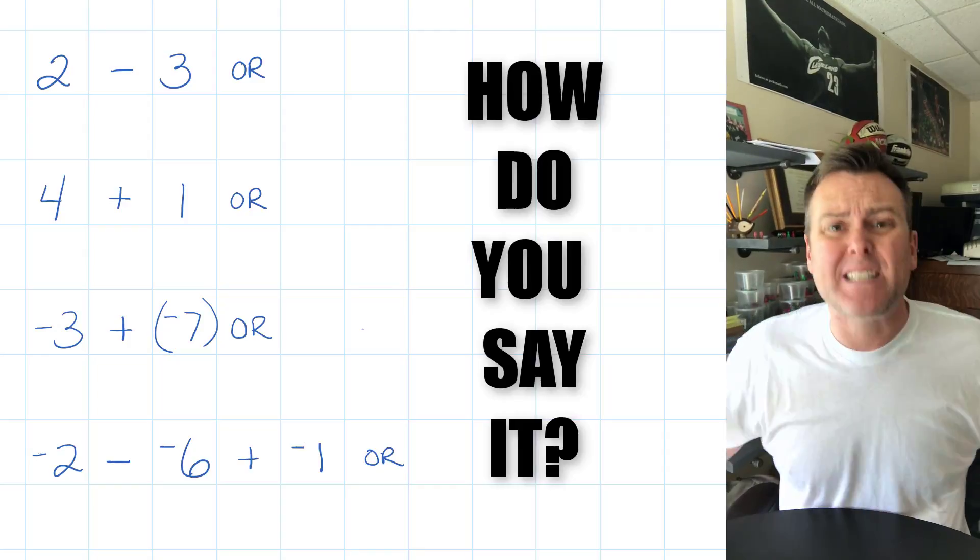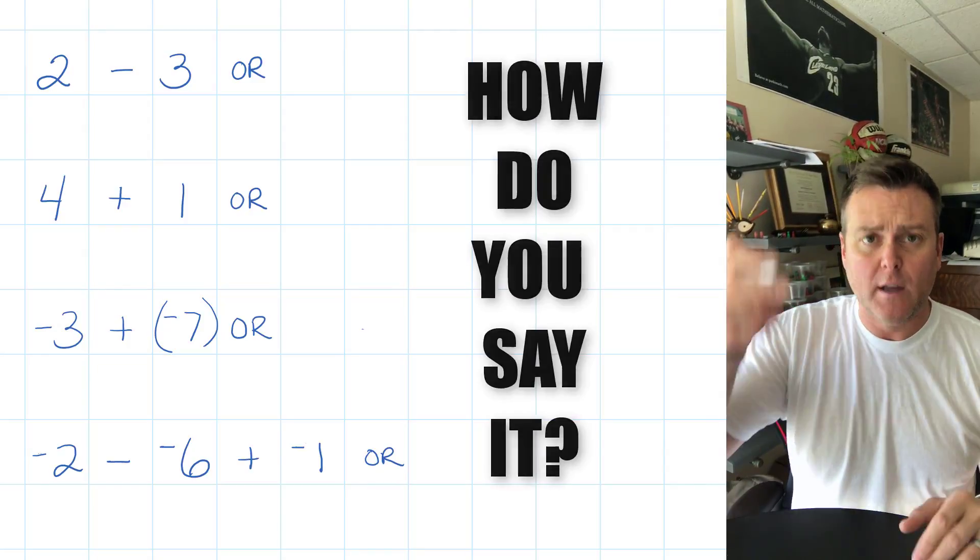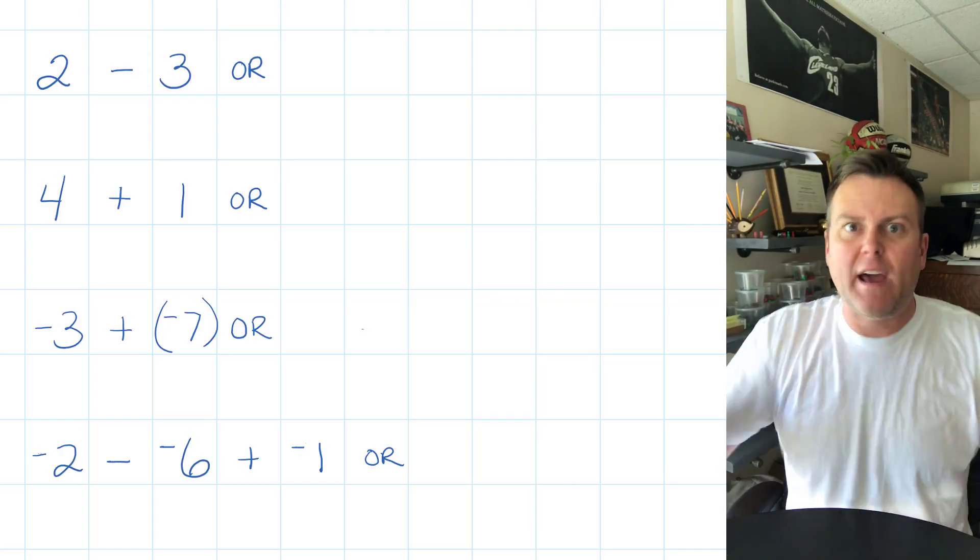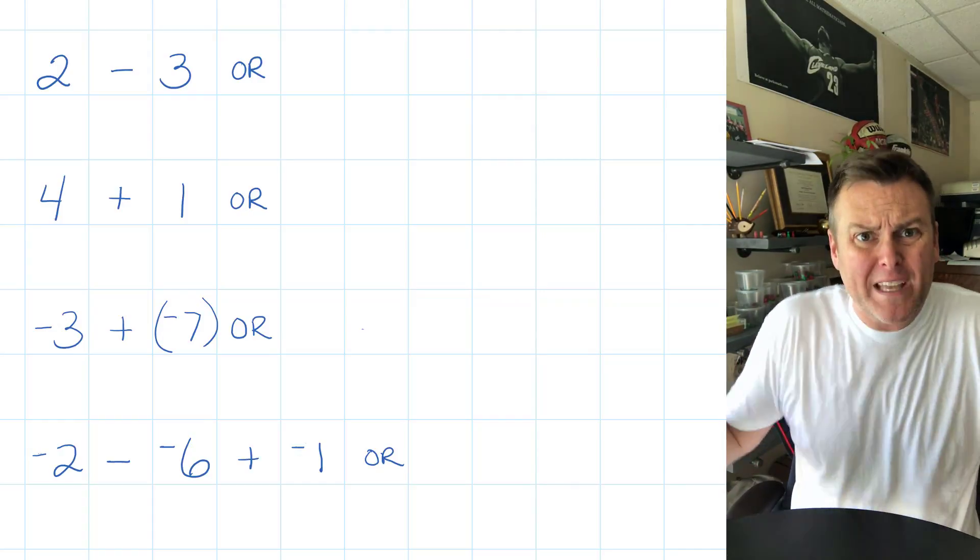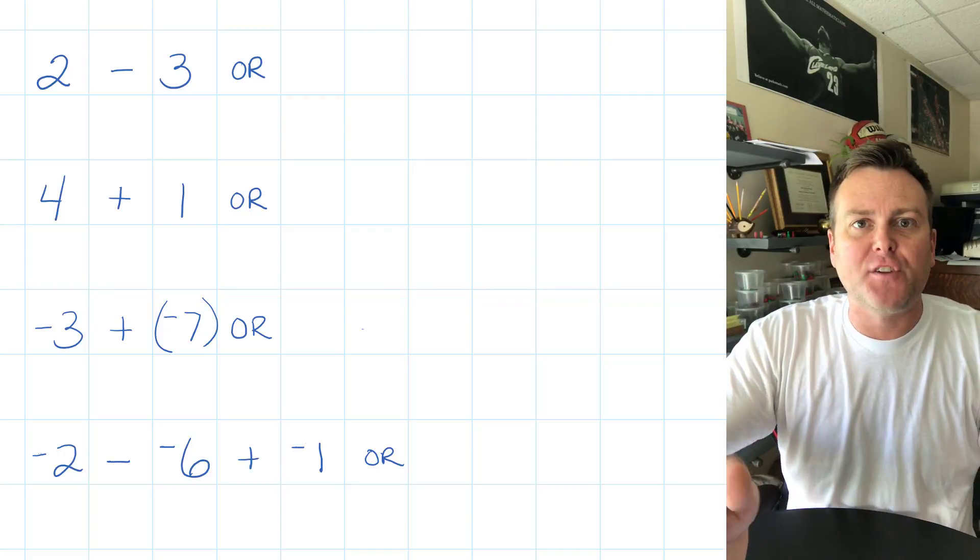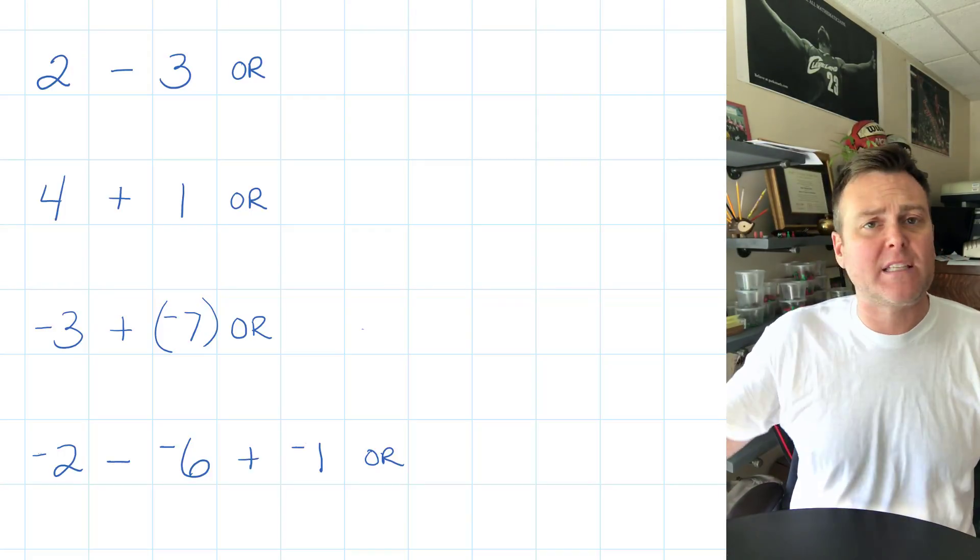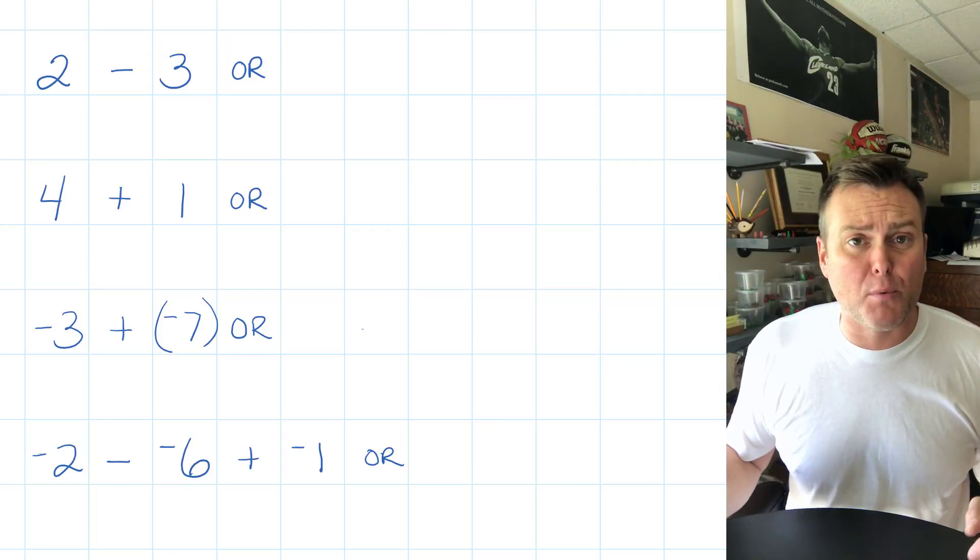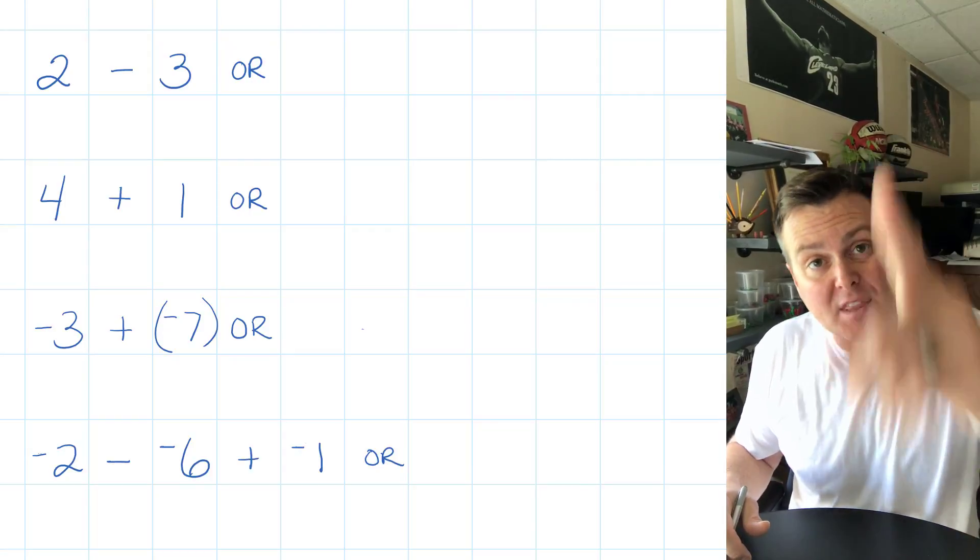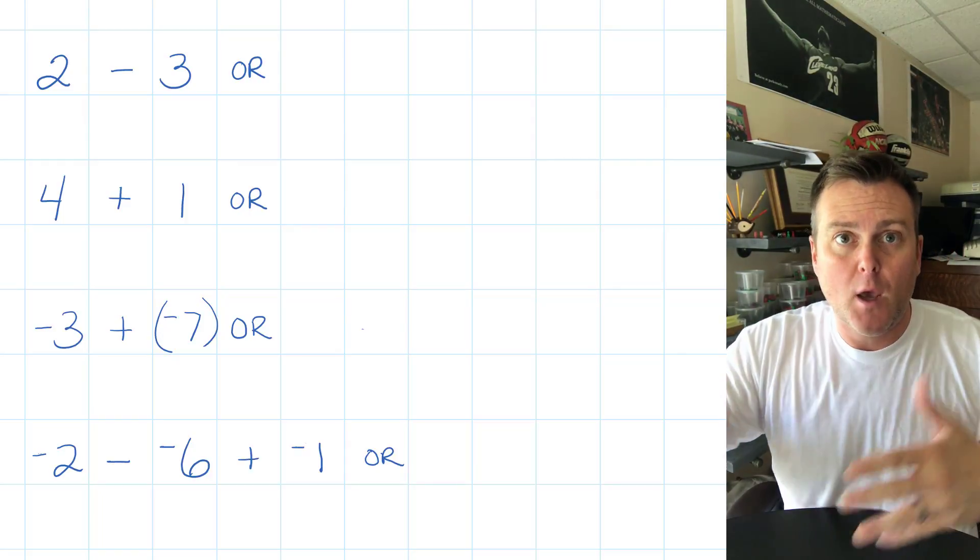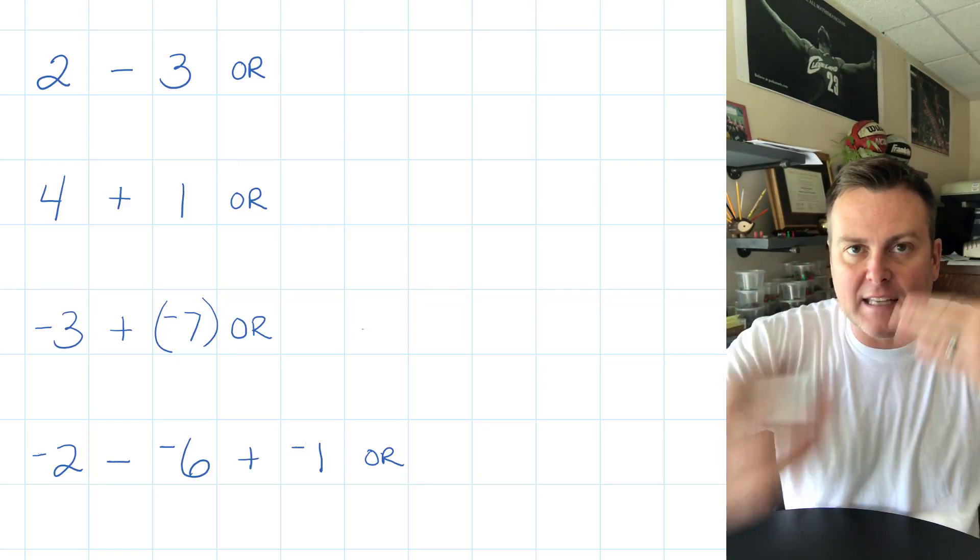Let's look at the first one right here: 2 - 3. How do you say it? That's really what it comes down to. This is two minus three. Do I have to say positive two? No, it's positive. The default is positive two. If I just say the number two, it's a positive number. If I say three, it's a positive number. But that's where we go wrong when we say subtracting three.